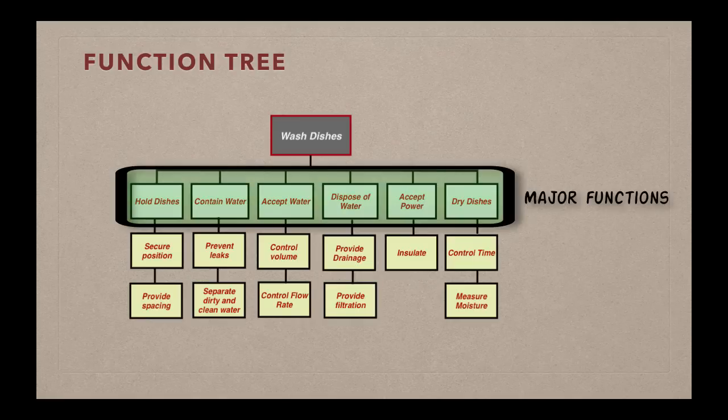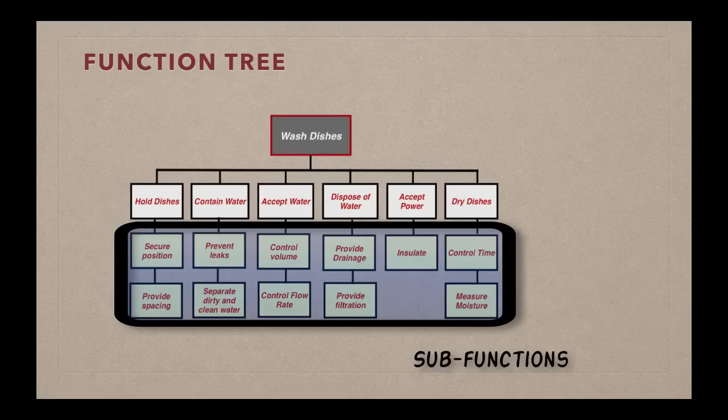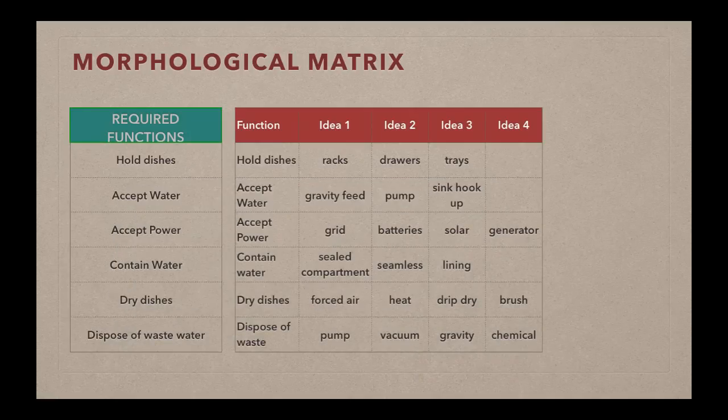So this is a function tree in that it shows the breakdown of the overall functions that are required to achieve the one top-level function, in this case, of washing dishes. So once we've done that, and this is absolutely necessary, identifying the functions that your system has to perform before you can devise what's called a morphological matrix.